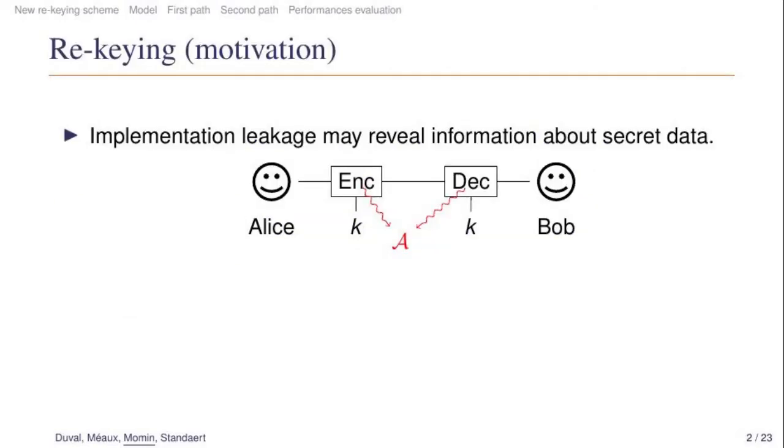As motivation, we will use the well-known symmetric cryptographic setup where Alice wants to exchange some data with Bob in a secure manner. For that, they both know a secret information key that they use either to encrypt some data in the case of Alice or to decrypt some data in the case of Bob.